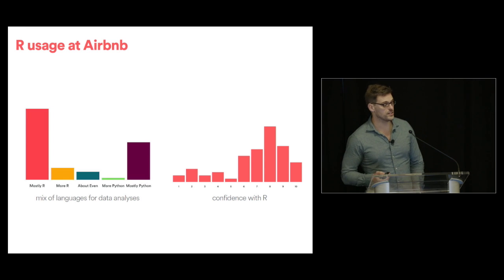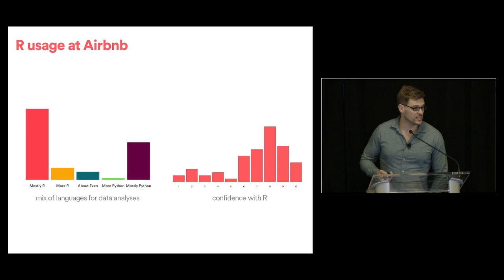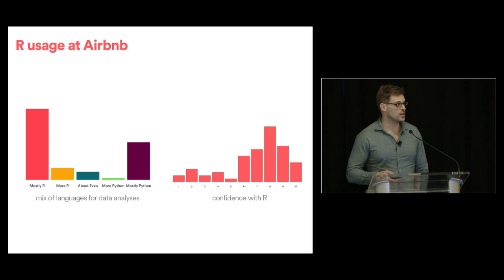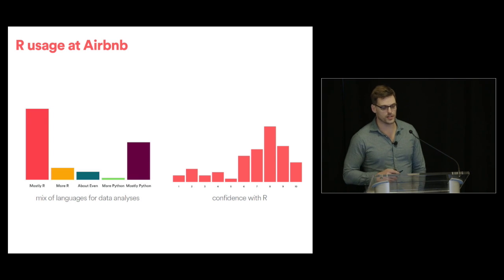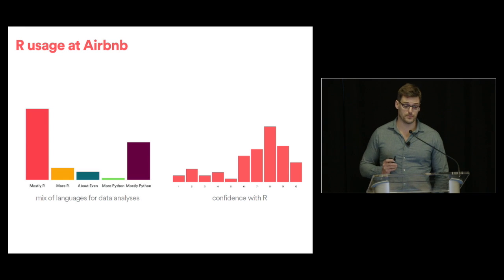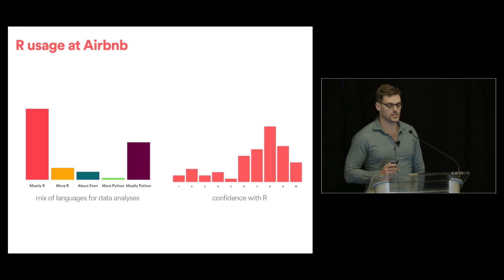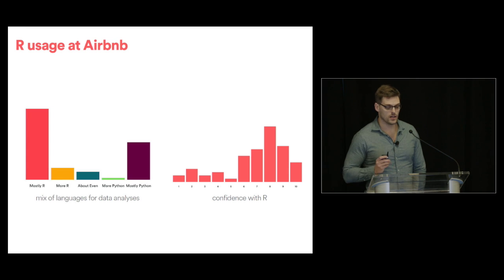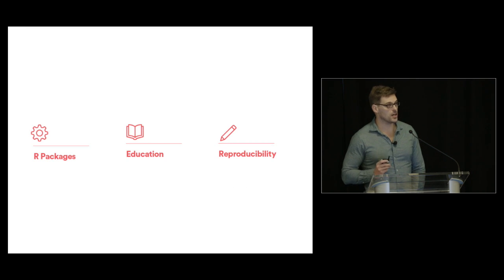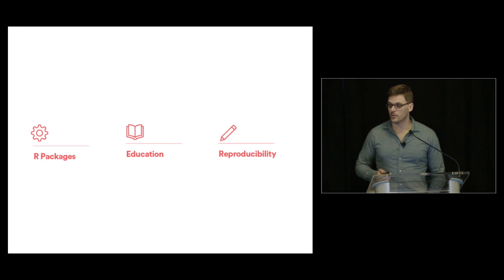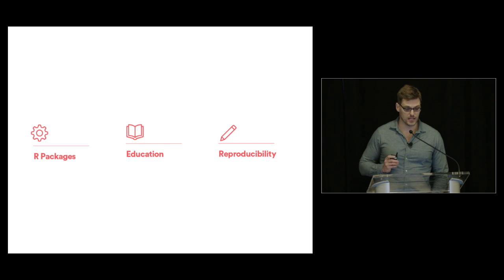This data science team is incredibly diverse in terms of gender and background. Some of them used to be professional poker players, others are economists and mathematicians. They're also very diverse in the tools they use. Once a year we have a survey with 100% participation, and this is the distribution of languages used at Airbnb. Most people use R, a lot of them use Python as well, and most people are highly confident with R. We think part of that was because of three pillars: R packages, R education, and a culture of reproducible research.